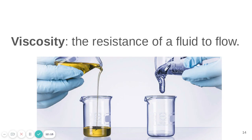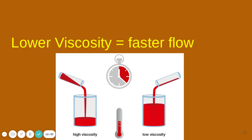Viscosity deals with the resistance of a fluid to flow — essentially, how fast something will flow. The lower the viscosity, the faster it will flow: high viscosity equals slow flow, low viscosity equals fast flow. For example, maple syrup has a much higher viscosity than tap water. And with that, this concludes our look at properties of fluids.